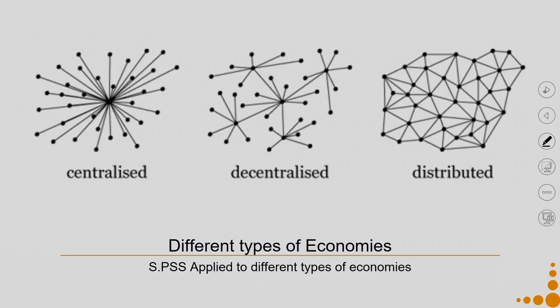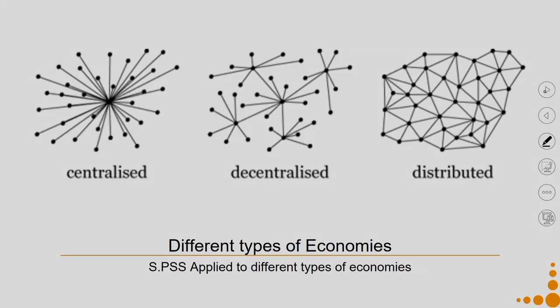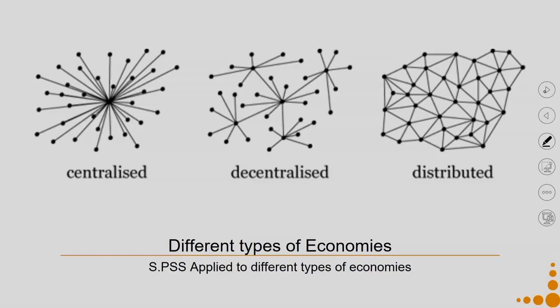When we were talking about the MSDS methodology, we were concentrating on all three dimensions of sustainability and our focus was on a product service system design which has inherent sustainable capabilities — because it is in the economic interest of the providers to be sustainable. Now, if we try to look at this sustainable PSS in terms of different kinds of economies: there are three types — centralized economy, decentralized economy, and distributed economy.